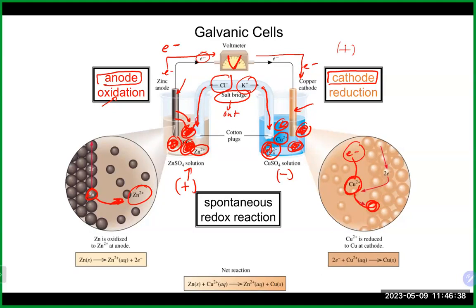The salt bridge keeps the right balance in the galvanic cell. The chloride ions come into the anode compartment to balance the positive charge building up there, and the potassium ions come into the cathode compartment to balance the negative charge. This keeps the electrons running from the anode side to the cathode side. Without the salt bridge, the voltage would go down because the electrons can no longer flow to the other side.